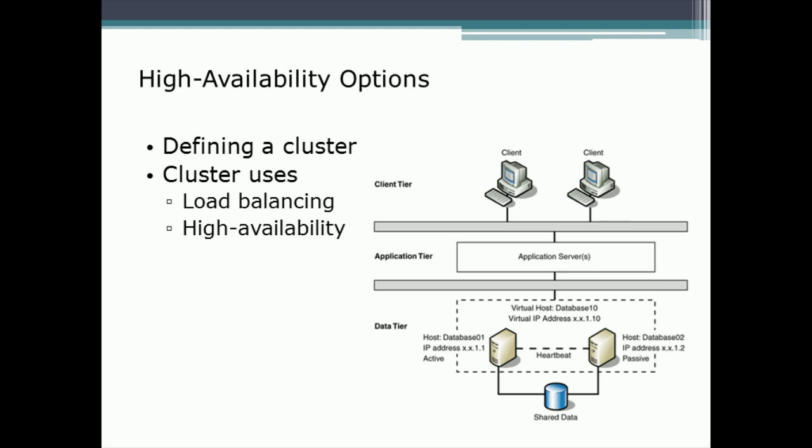When we take a look at clustering, the idea is to have two or more devices that appear to be a single one. So we have Server 1 and Server 2 that are independent servers, but they have a cluster set up where they are talking to each other through what we call a heartbeat. The heartbeat is our way of detecting whether or not our neighbor has died — no heartbeat means they're gone.